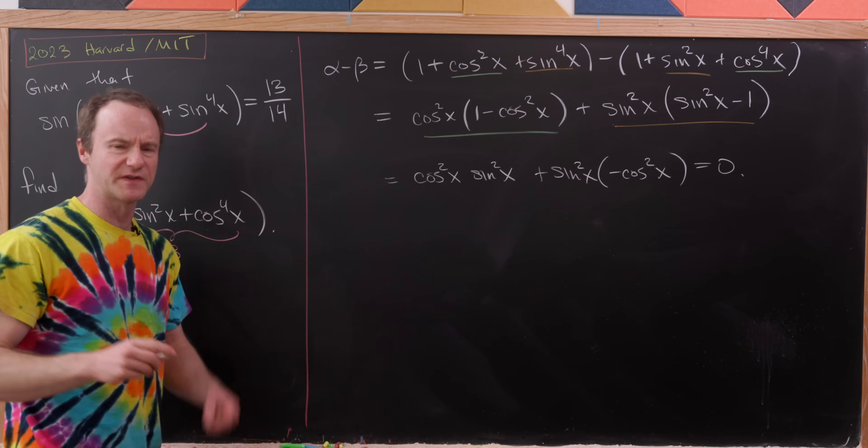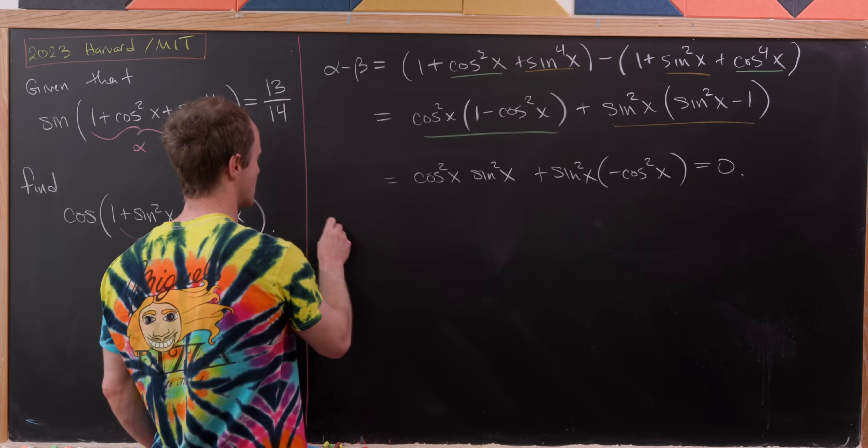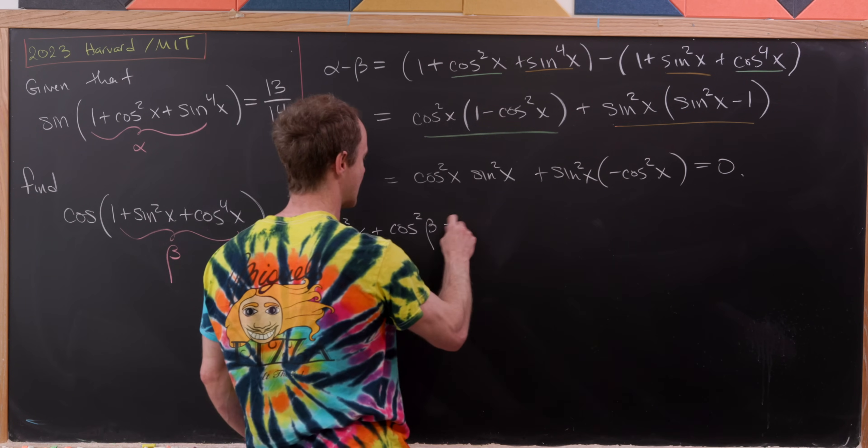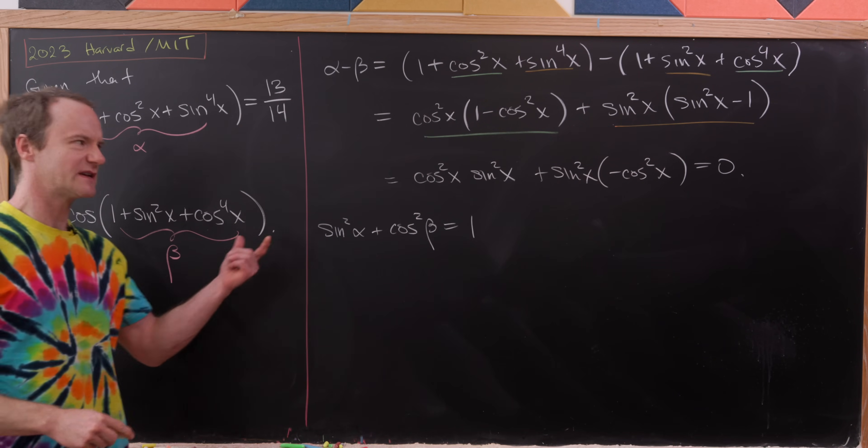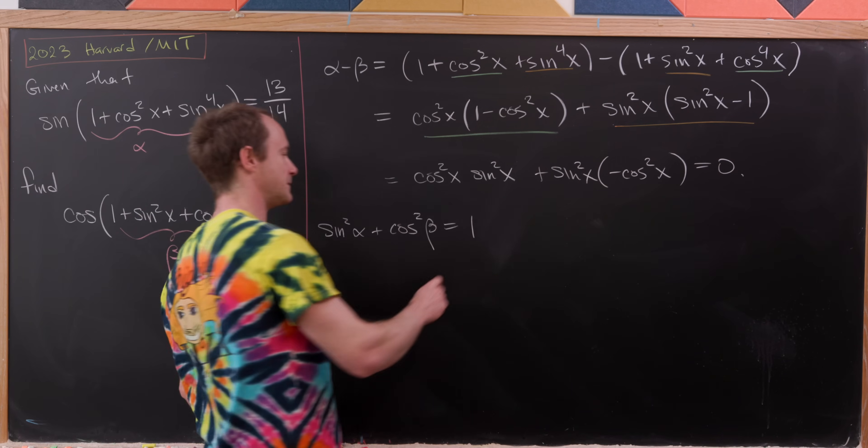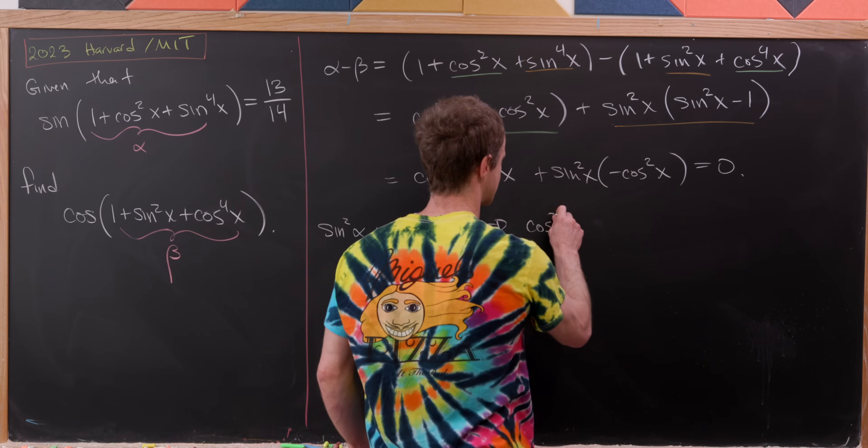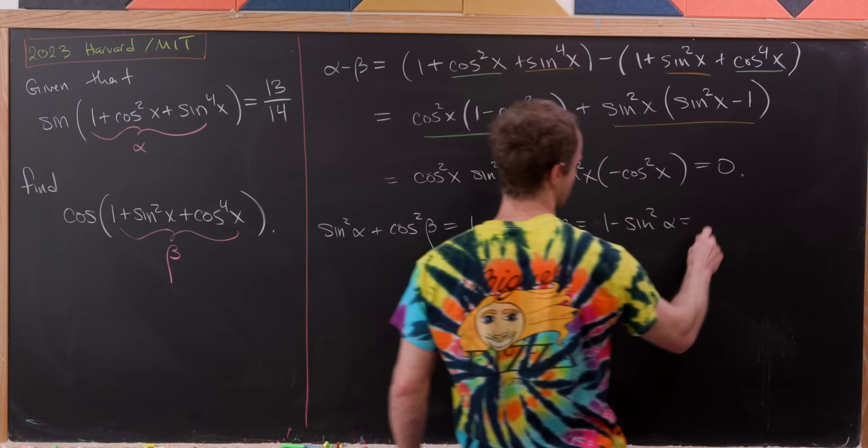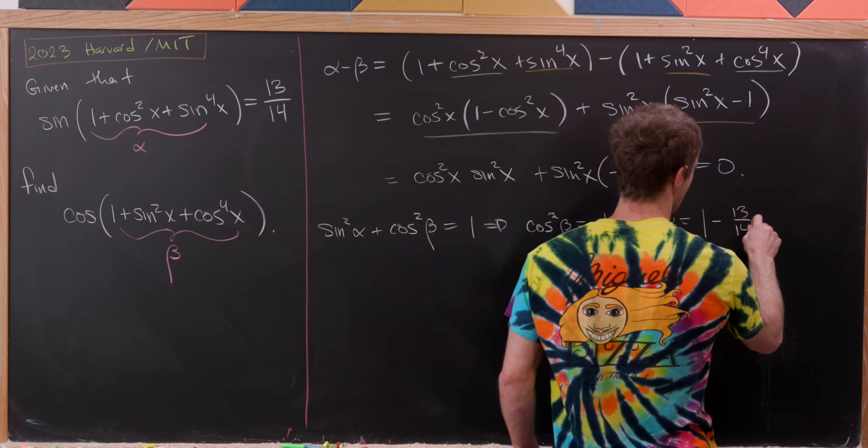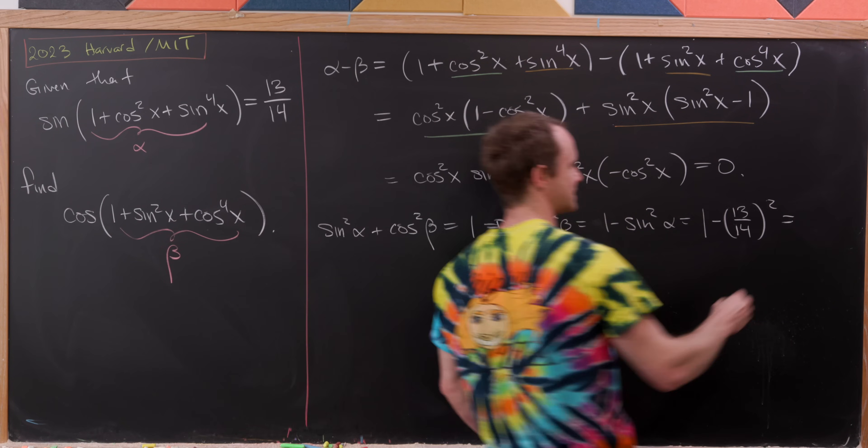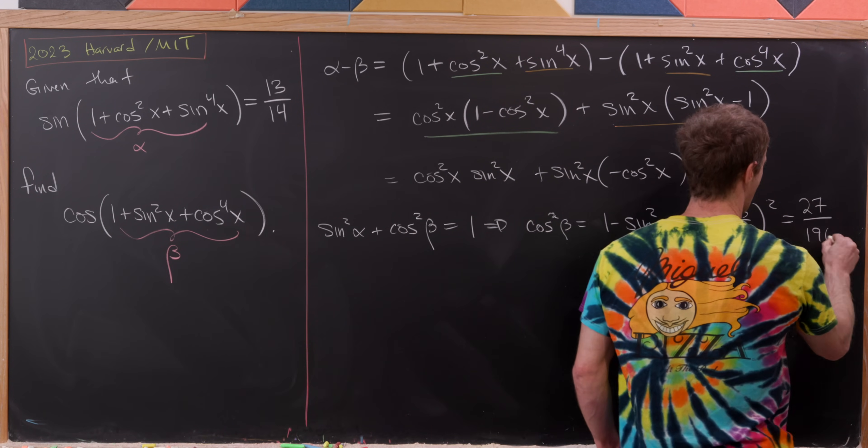But now we can start to put this stuff together. Notice that we know sin²α + cos²β will be equal to 1, because alpha equals beta. So now we know sin(α), so we can use that to solve for cos²β. This means that cos²β = 1 - sin²α = 1 - (13/14)². But now we can calculate that, and we'll see that equals 27/196.